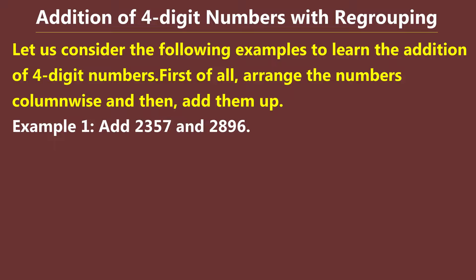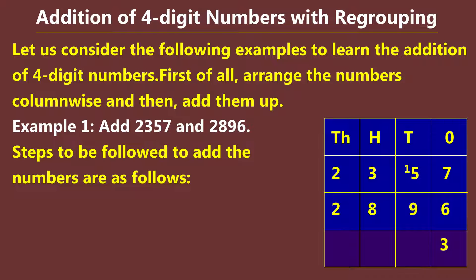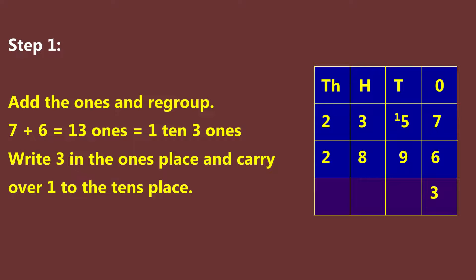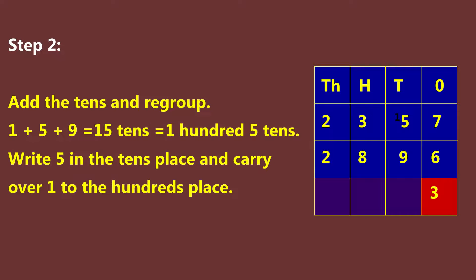Step 1: Add the ones and regroup. Seven plus six is equal to thirteen ones — one ten, three ones. Write three in the ones place and carry over one to the tens place. Step 2: Add the tens and regroup. One plus five plus nine is equal to fifteen tens — one hundred, five tens. Write five in the tens place and carry over one to the hundreds place.